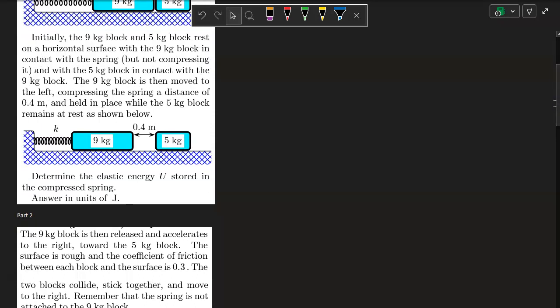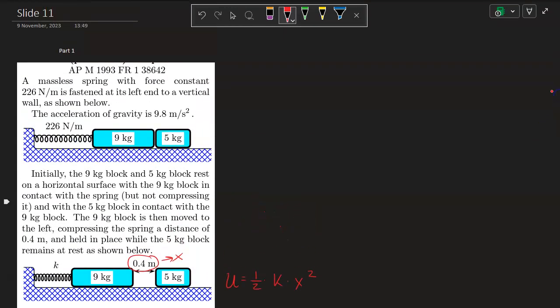For part one, determine the elastic energy U stored in compressing the spring. Well, this one's pretty easy. U is going to be one half times K times X squared, where the X is the distance that it gets compressed. This is the X. And the K value is that Newton per meter. So that's pretty straightforward, easy to solve.